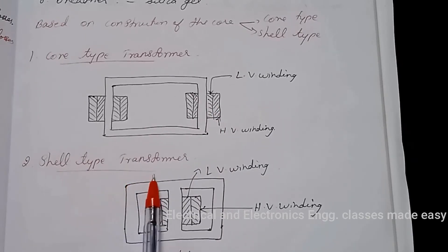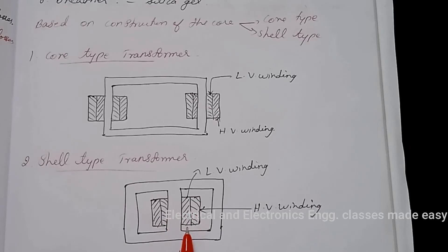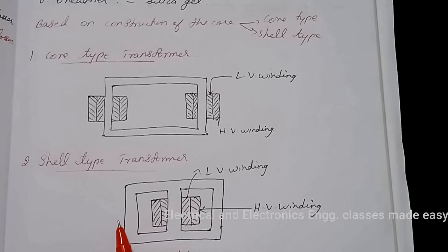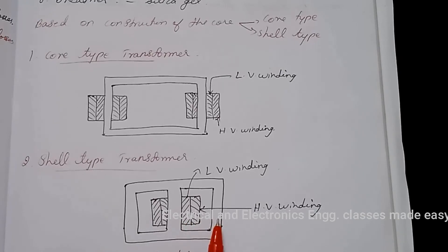Next is shell type transformer. This method of construction involves the use of a double magnetic circuit. Both the windings are placed around the central limb. The other two limbs act as low reluctance flux path. The central limb carries whole of flux whereas the side limbs carry half of the flux.